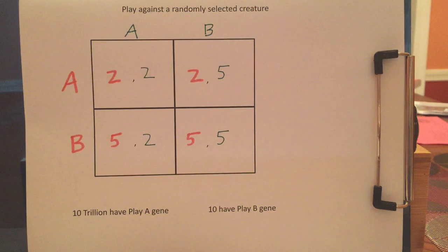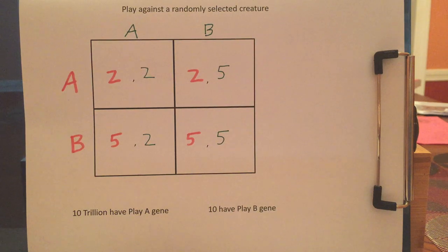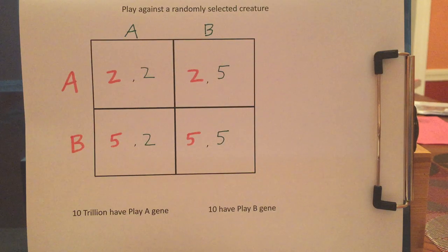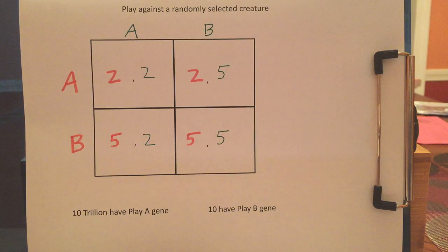Today we're going to talk about evolutionary stability. Rather than rationally making your choice, let's imagine the players have a gene that dictates how they play. You're going to either have a gene that makes you play A, or a gene that makes you play B. Your score determines your success in passing on your genes to the next generation. Think of your score as how much food you get, and the more food you have, the more children you get.